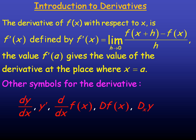You can use the first principles definition to find any instantaneous rate of change. Now if you evaluate f prime, the derivative, at a specific number a, that gives the value of the derivative at that point — the instantaneous rate of change at that point.